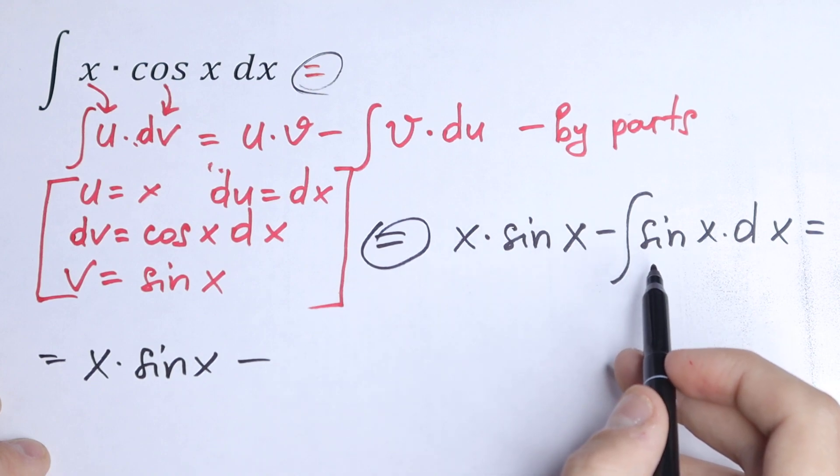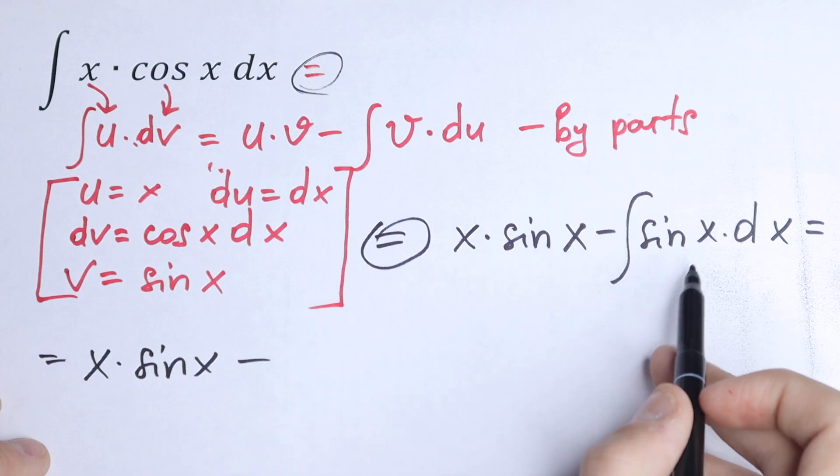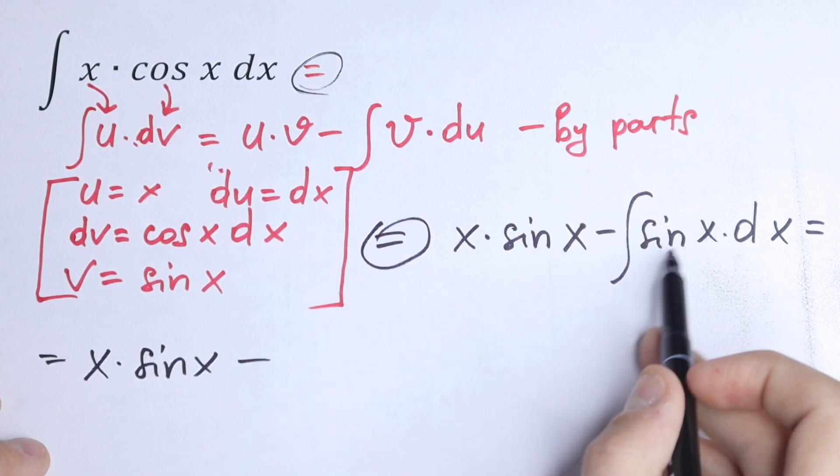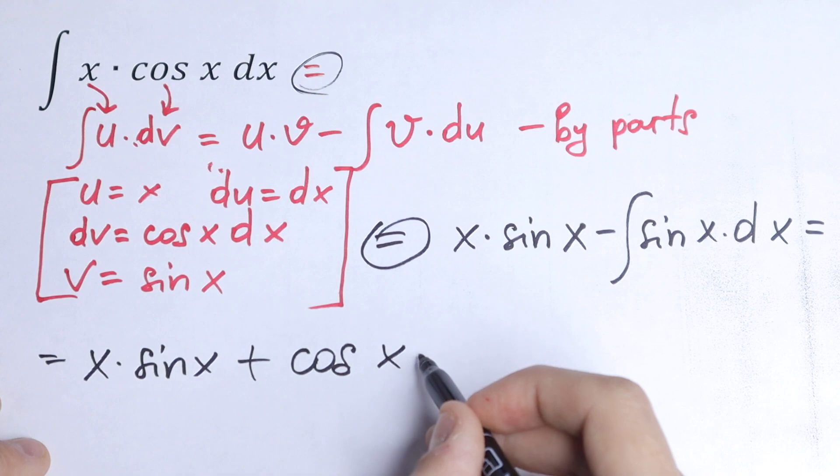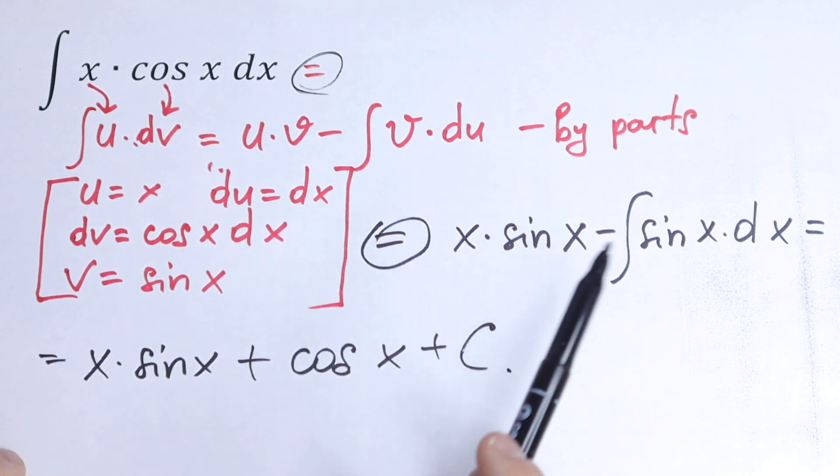As a result we will have x sine x minus this integral, which we of course can calculate. The integral of sine will be minus cosine x, so as a result we will have plus cosine x, and plus c. This is our answer.